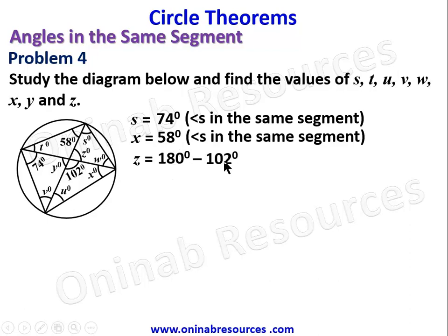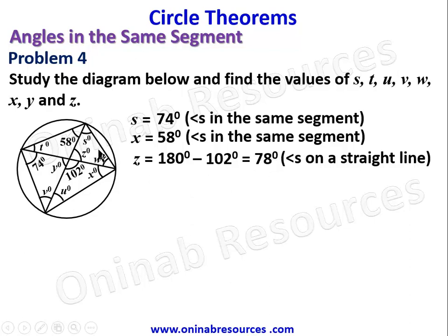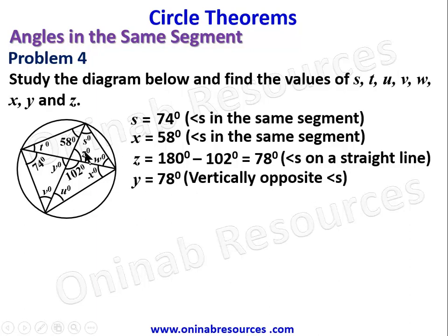This is a straight line, so z is equal to 180 minus 102 degrees — angles on a straight line — giving z equal to 78 degrees. Since this is also a straight line, y is vertically opposite to z, and vertically opposite angles are equal, therefore y is equal to 78 degrees.